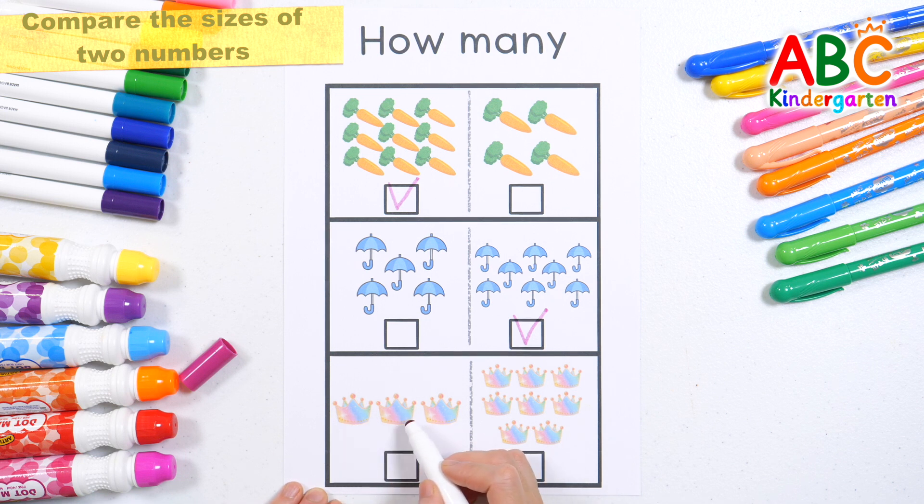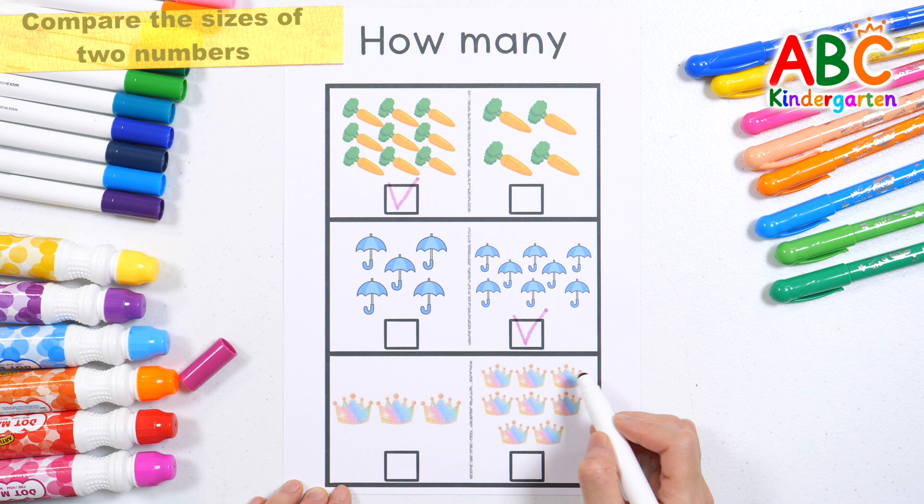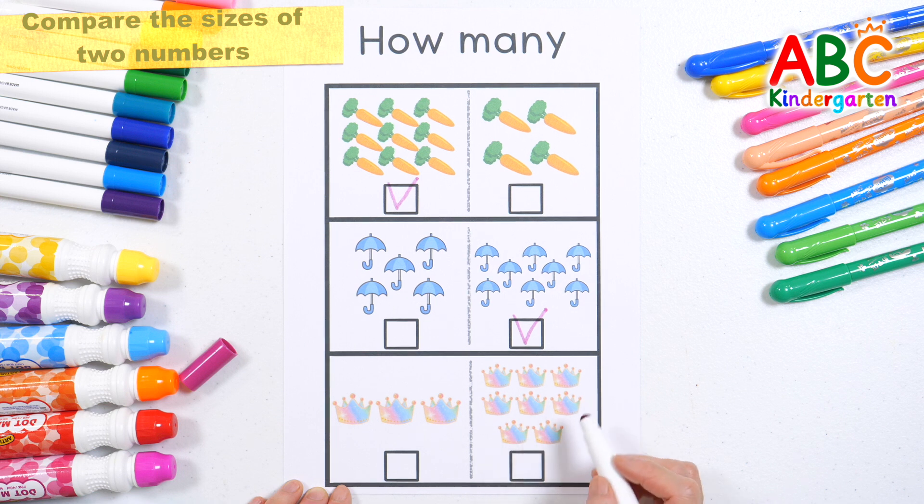Let's count the numbers! One, two, three. Three crowns! One, two, three, four, five, six, seven, eight. Eight crowns!